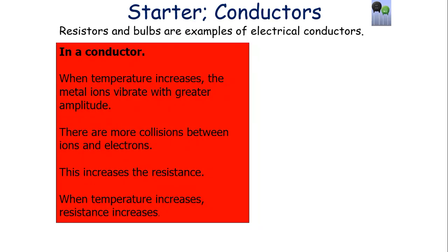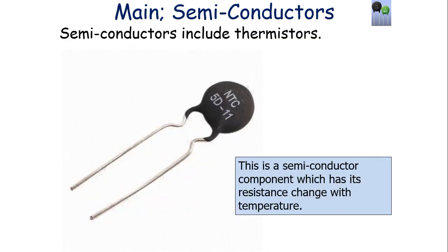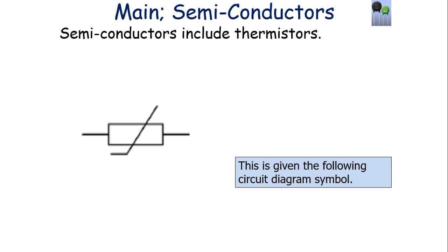Previously, when we've looked at conductors like resistors and bulbs, we found that when the temperature increases, the metal ions vibrate with a greater amplitude, so there are more collisions between the ions and the electrons, increasing the resistance. So for resistors and bulbs, when temperature increases, resistance increases. But not all materials are conductors — we can also get semiconductors. Semiconductors include thermistors, which are components whose resistance changes with temperature, represented by their circuit diagram symbol.